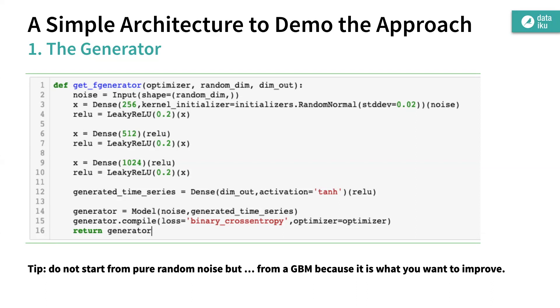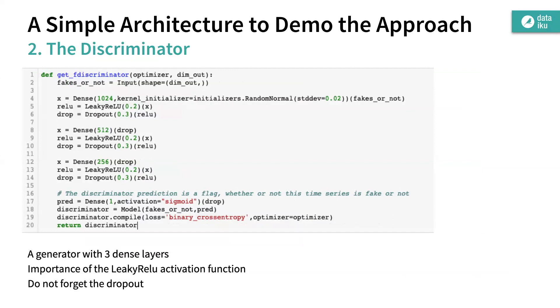The discriminator is also simple — it doesn't even have a notion of time. It's not even deep learning really; it's just three dense layers.